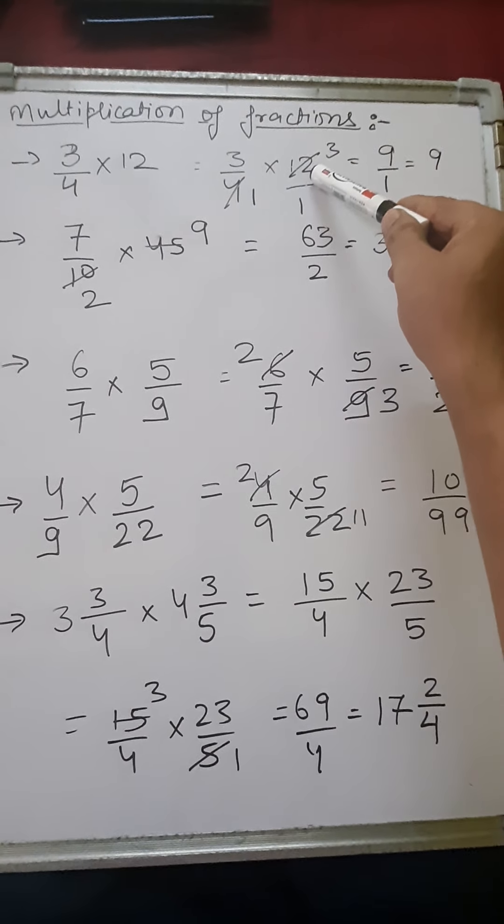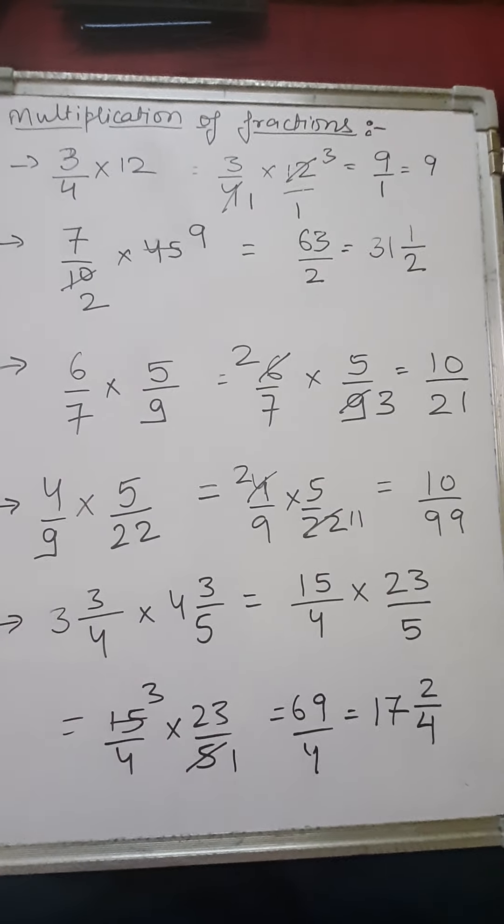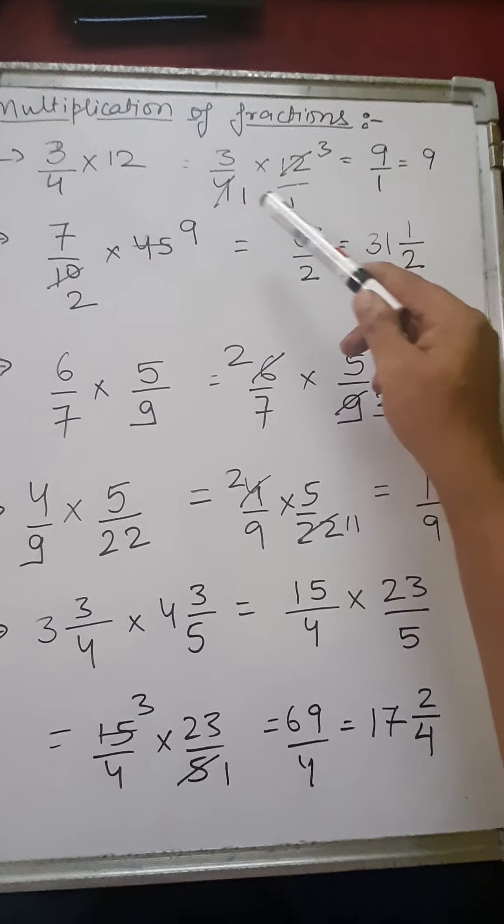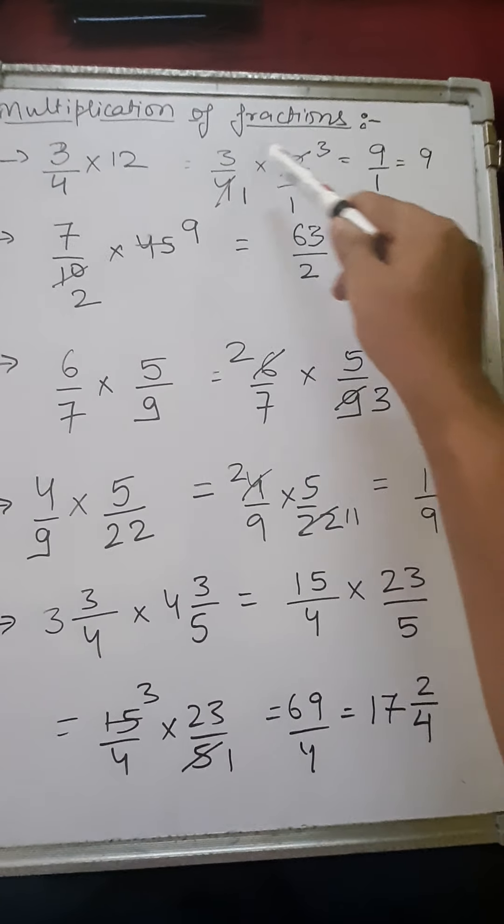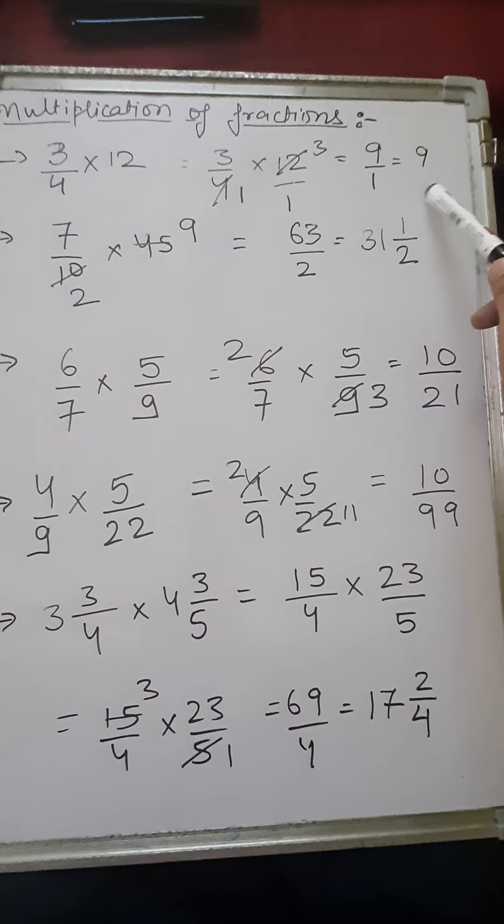So this 4 ones are 4, and 4 threes, the 12 we know, and 3 into 3 is 9. It will come 9 upon 1, that is 9.